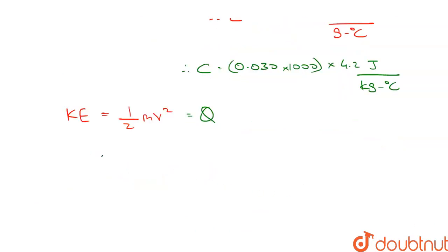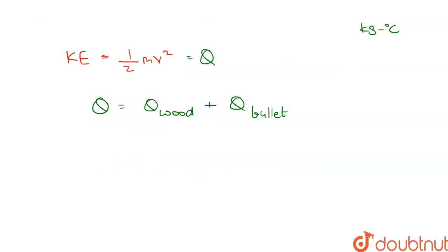Now the heat liberated Q is summation of heat absorbed by the wooden target plus the heat absorbed by the bullet. And it is given to us that the heat absorbed by the bullet is equal to half of the kinetic energy of the bullet.